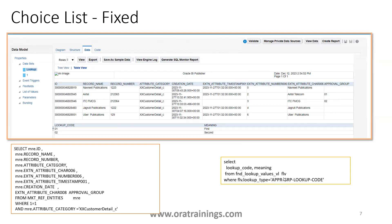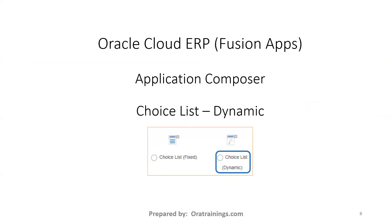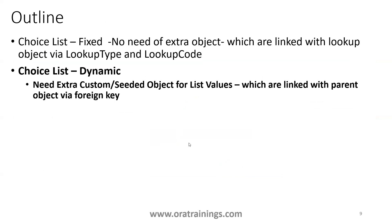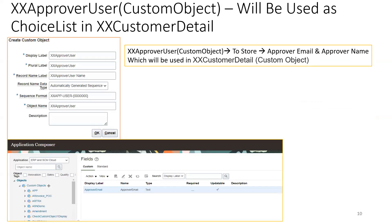Now let's look at the next one — the dynamic choice list. For the dynamic type, you require a new custom object to be defined, and that custom object you can link to the existing custom object. Let's see how that works.